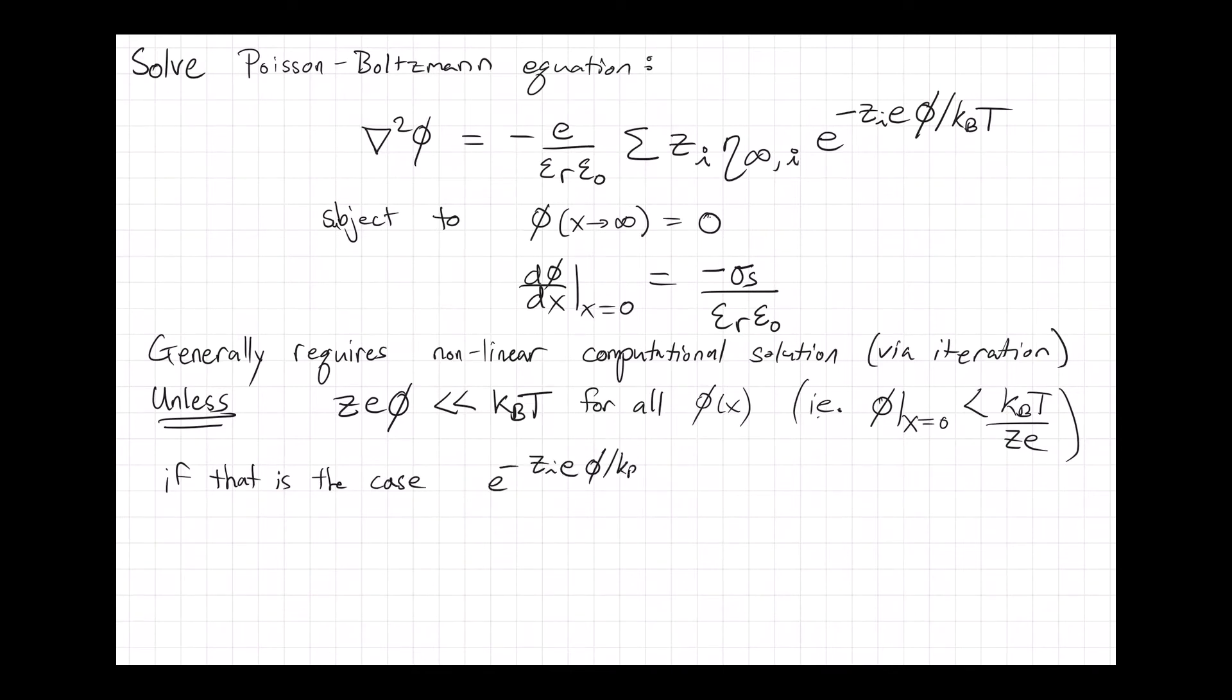You can write the exponential term that appears inside the summation instead as one minus z times the elemental charge times the potential divided by kBT. And the important part there is that when I make that simplification, the electrostatic potential appears as a linear term.